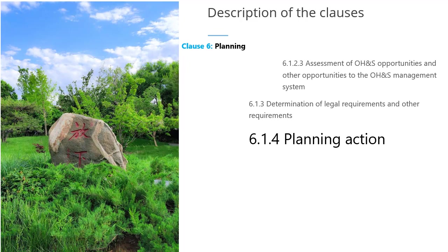Clause 6.1.4 relates to planning actions, which shall include the actions to address the risks and opportunities as well as legal requirements, and to prepare for and respond to foreseeable emergency situations, incorporating these actions through systematic procedures within the OHS management system. Moreover, the organization shall plan how to measure the effectiveness of the planned actions.